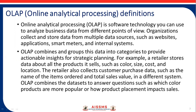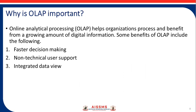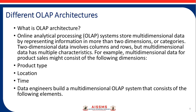For example, a retailer stores data about all the products it sells, such as colors, size, cost, and location. The retailer also collects customer purchase data — such as the name of the item, order, and total sales value — in a different system. OLAP combines the data to answer questions such as which color products are more popular or how product placement impacts sales. OLAP helps organizations process and benefit from a growing amount of digital information. Benefits of OLAP include faster decision making, non-technical user support, and integrated database.